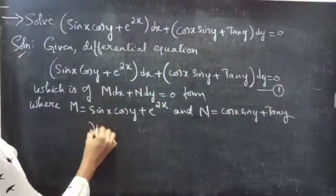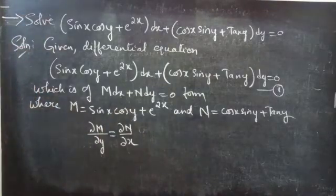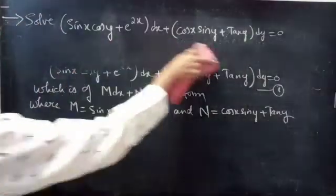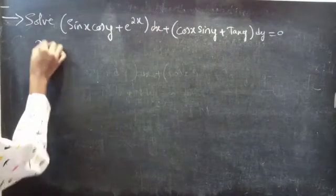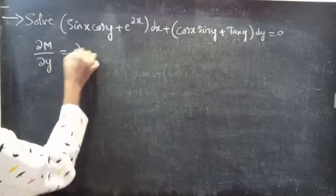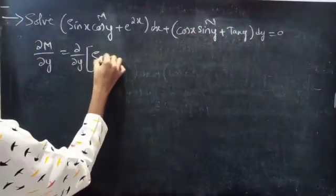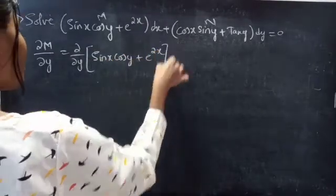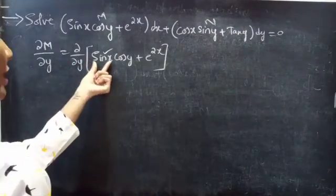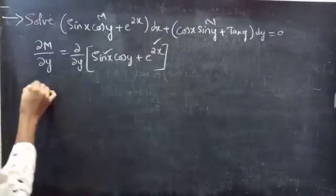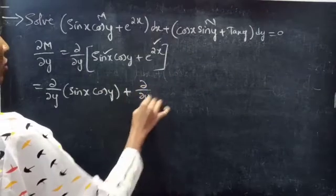If the partial derivative of M with respect to y is equal to the partial derivative of N with respect to x, then we can see that the given differential equation is an exact equation. So we will find the partial derivative of M with respect to y, and N with respect to x. ∂M/∂y equals ∂/∂y of M, which is sin x cos y plus e power 2x.